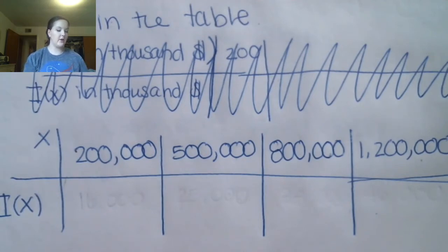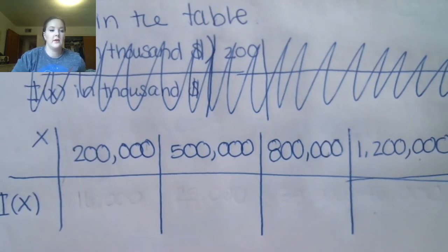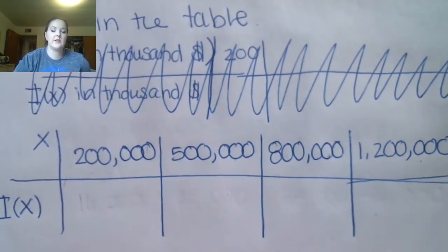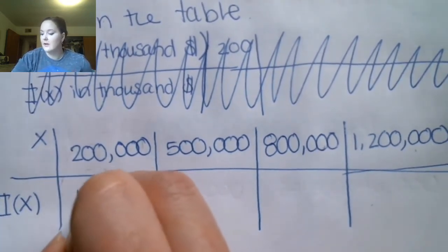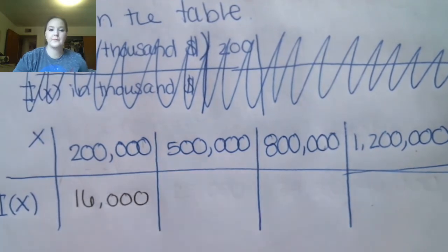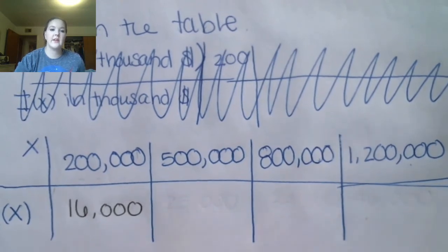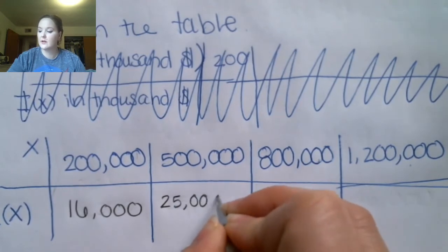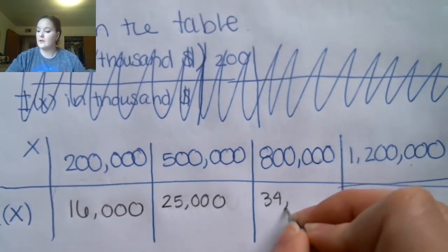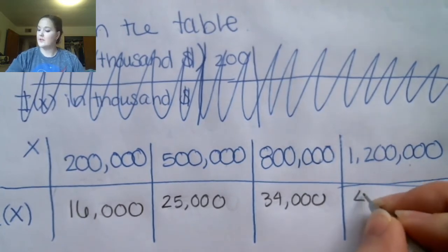Let's check the answers. The first thing to do is take 3% of the sales: 0.03 times 200,000 gives 6,000, then add the base salary of 10,000 to get 16,000. Doing the same process for the rest: the next value gives 25,000, then 34,000, and then 46,000.